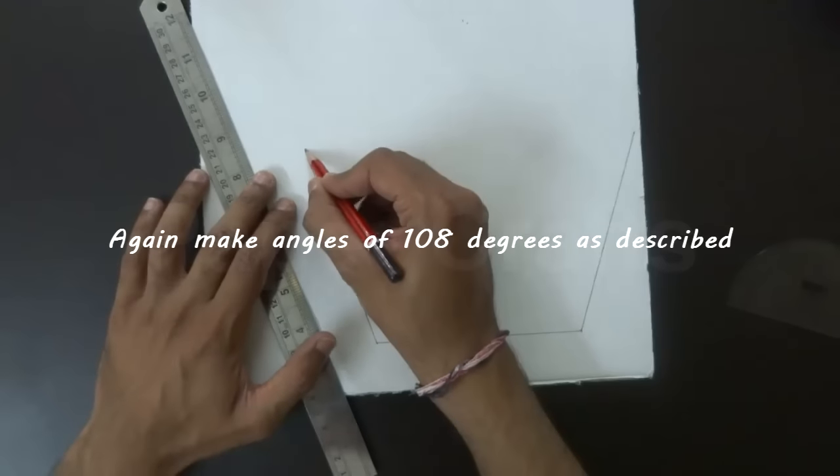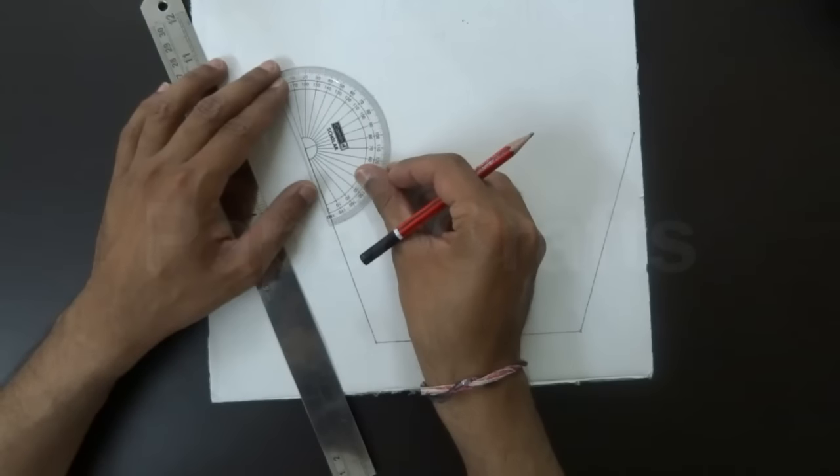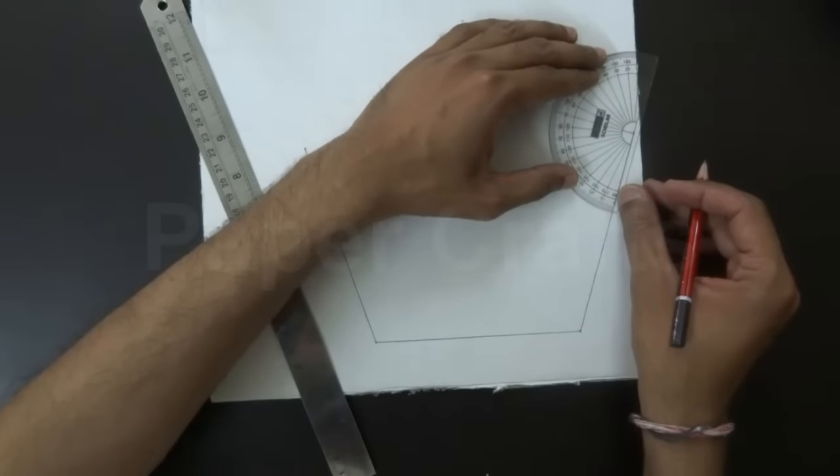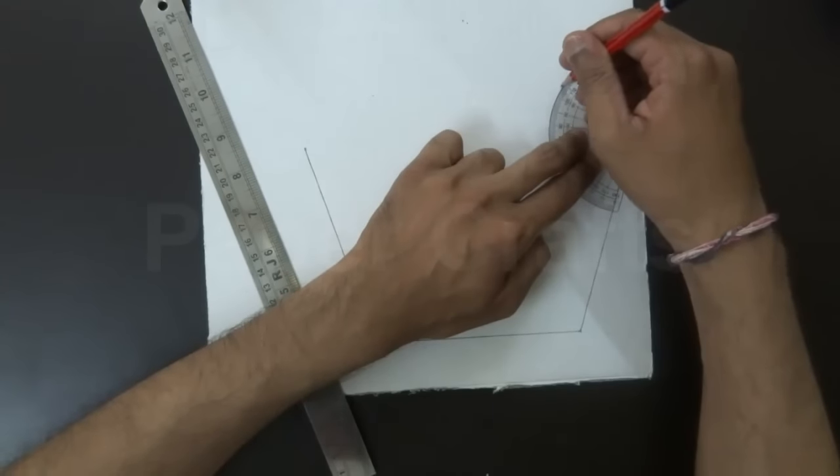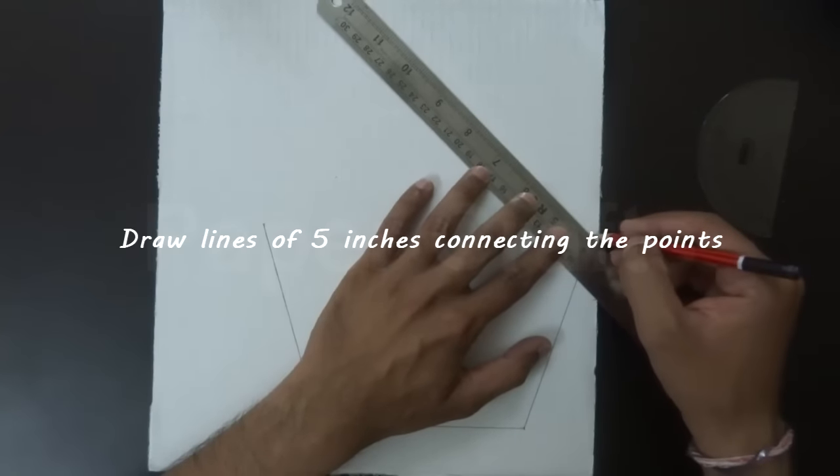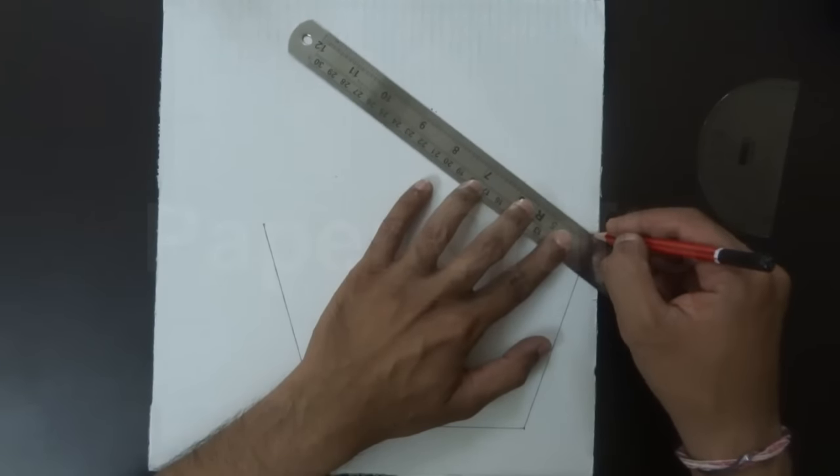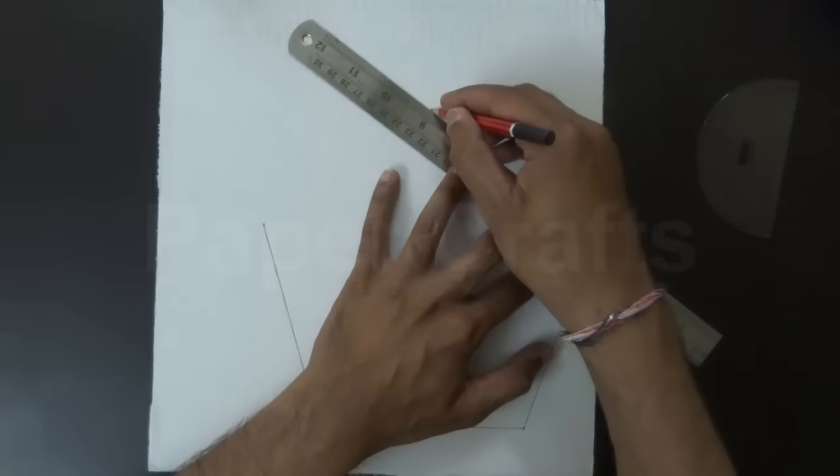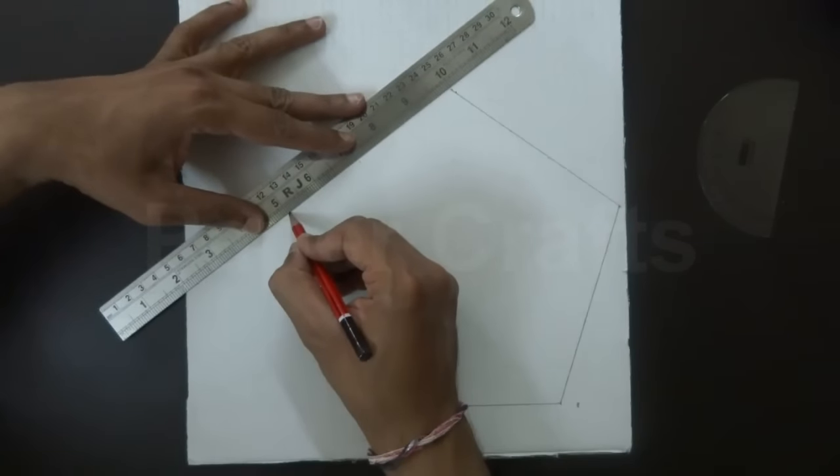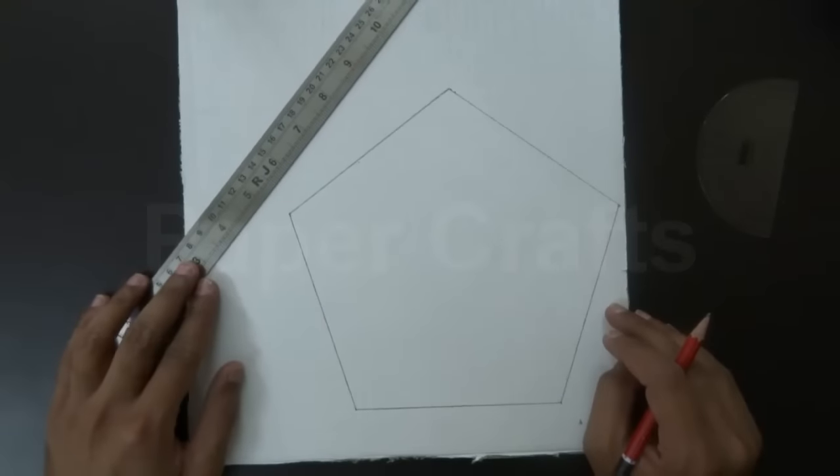Now make an angle of 108 degrees at this point and at this point. Now draw lines of 5 inches connecting these points. Here we have got a pentagon of 5 inches.